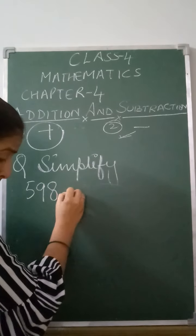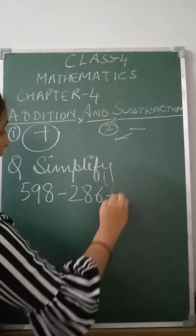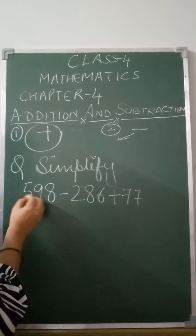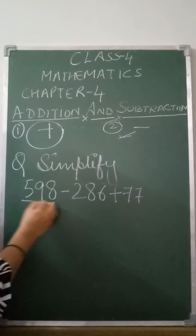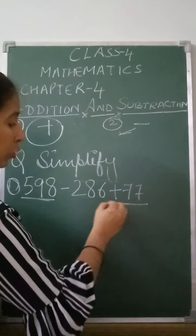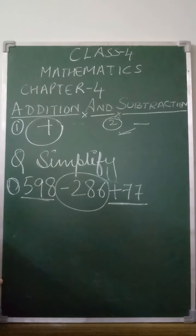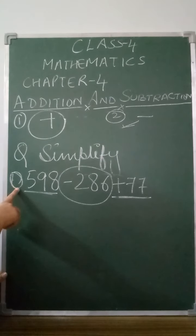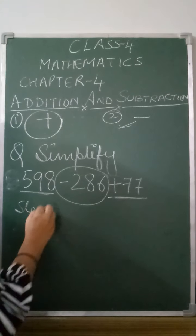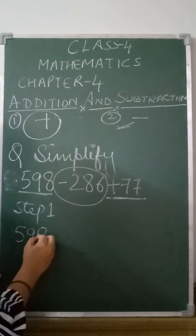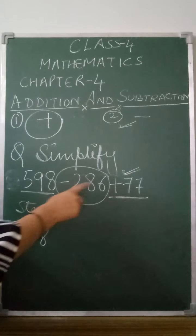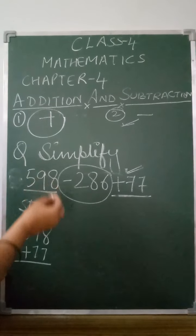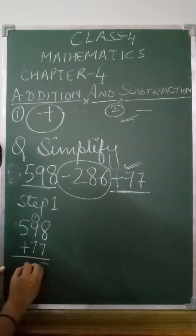Let's take one more example. In this question, subtraction comes first and addition is in the second place, but since this is simplification, you again follow the rule — add first. One important point: a number with no sign is a positive number. So we first add all the positive numbers, and the negative number comes in the second step.